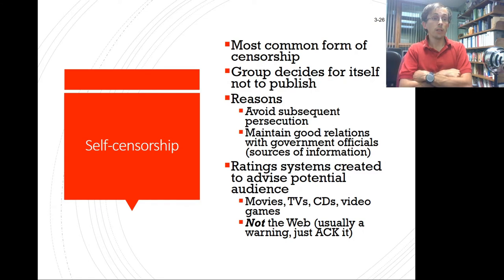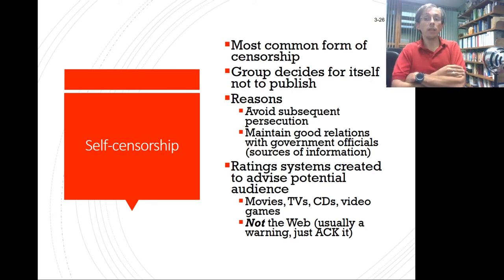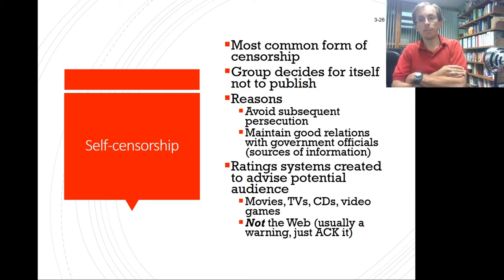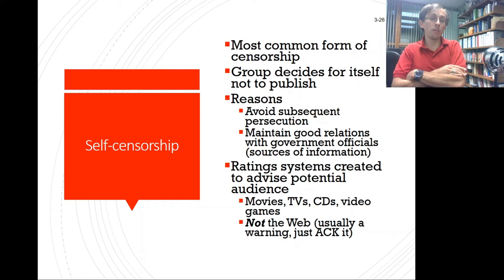Journalistic agencies sometimes self-censor to protect others from danger. During the 2003 Iraqi invasion, some groups embedded with troops decided not to publish certain things. Quinn discusses the CNN bureau chief in Iraq and Jordan who admitted suppressing negative information about the Hussein government to keep the news bureau running and to keep Iraqi staff members safe — a pragmatic if ethically debatable decision.